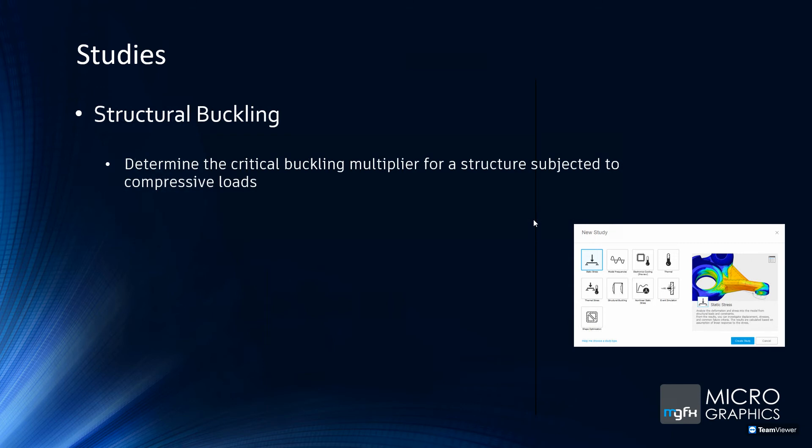Then there's structural buckling, which determines the critical buckling multiplier for a structure. For example, apply a force on a long pole — the material might not be at its critical stress value, but it can still buckle. You can see at what loads and where the object is going to buckle.